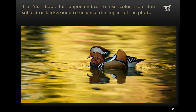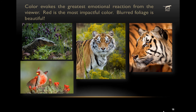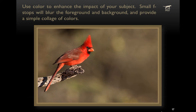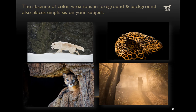The fifth tip is to look for opportunities to use color from either the subject itself or the background to enhance the impact of the photo. For example, a reflection of a palm tree in murky green water can turn it a liquid gold color. But it doesn't have to be that dramatic — blurred foliage using a long focal length and a small F-stop can blur the background completely and give a simple collage of color. Sometimes it's the lack of color — a fully black or fully white background — that can also enhance the emphasis on your subject.